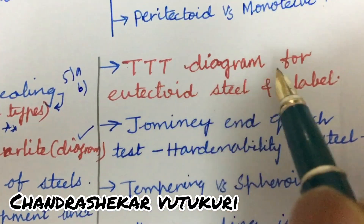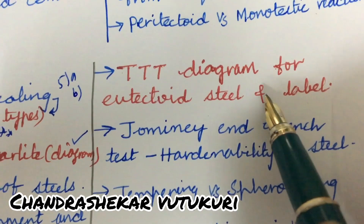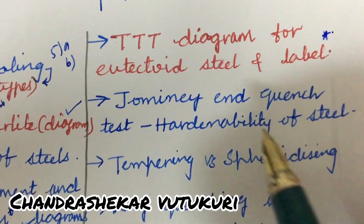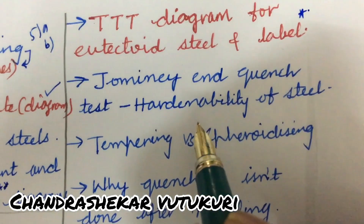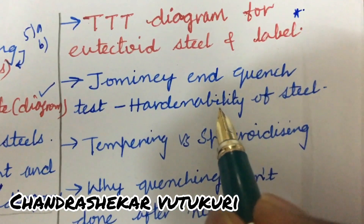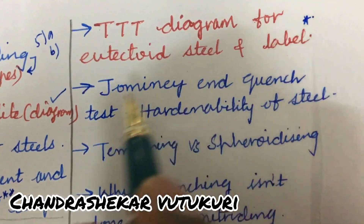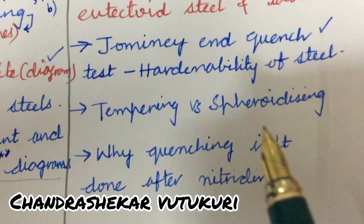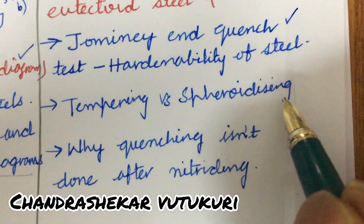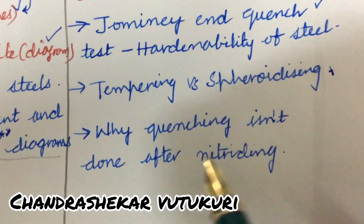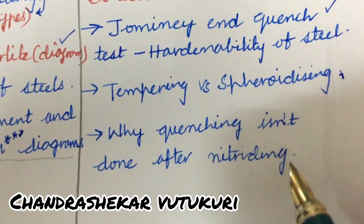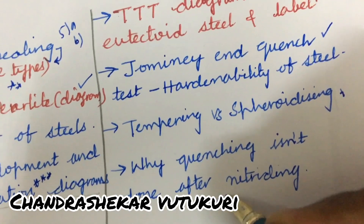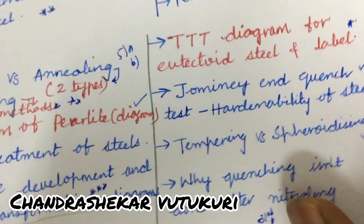The TTT diagram for a eutectoid steel — label each and every part of it. The Jominy end-quench test for hardenability of steel, along with its knee diagram, tempering versus normalizing differences, and why quenching is not done after nitriding — these may be asked as 6A as well as 6B in your question paper.